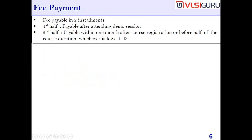The second half of the fee should be payable within one month after course registration, or before half the course duration — whichever is earliest. For example, for a System Verilog course of two and a half months: if you pay the first installment on 4th June, the next installment must be paid on or before 3rd July.